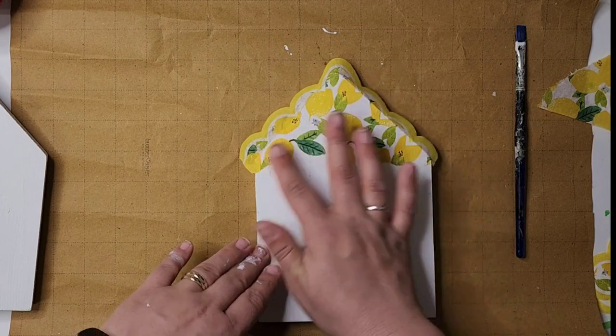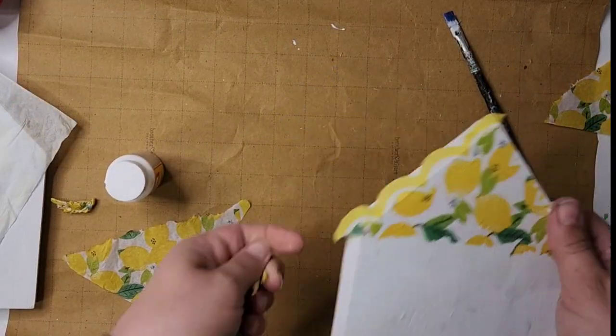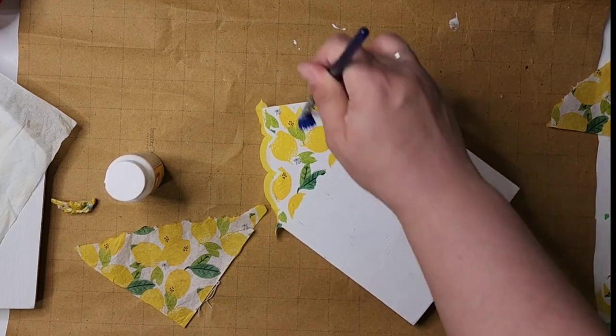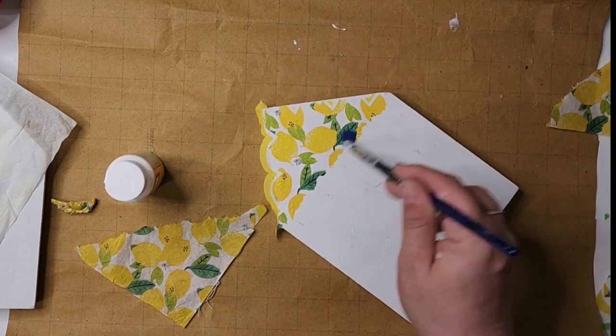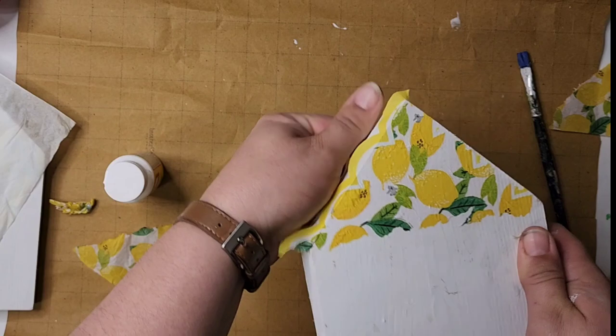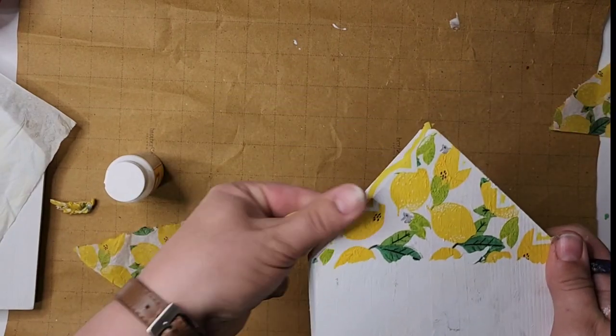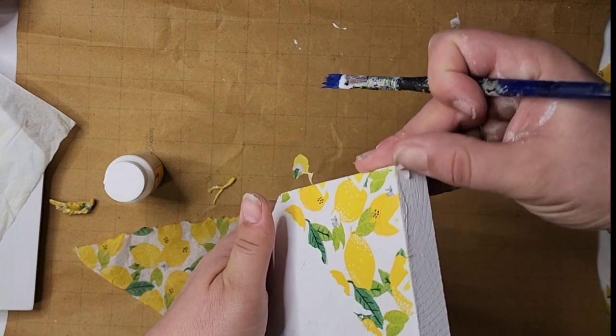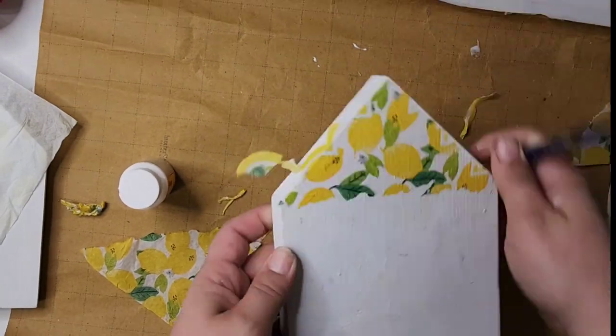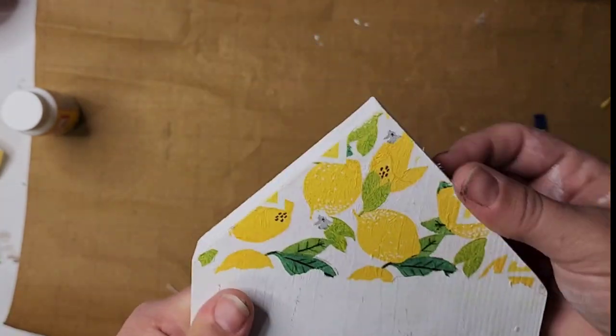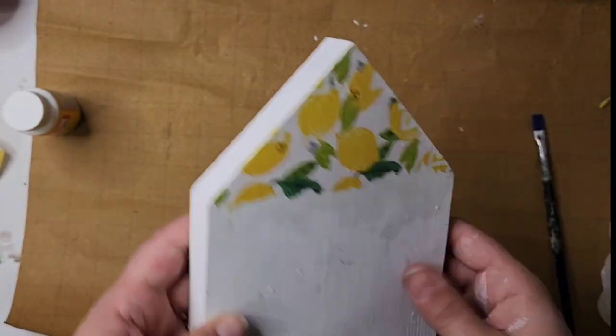Once that's on, I was able to just rub it with my thumb and get that excess napkin off the roof. I did do the tear method on this one, though I could have just done the cutting method. I ended up actually sanding that down really well on the top to make it look a little distressed or vintage.